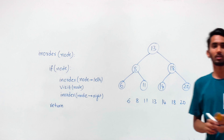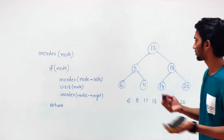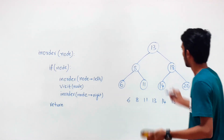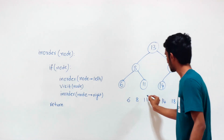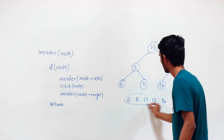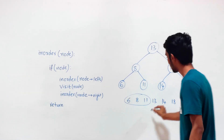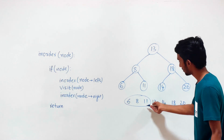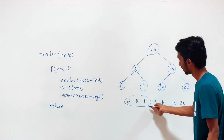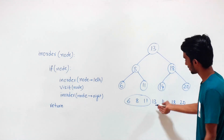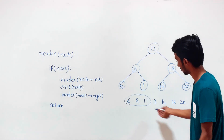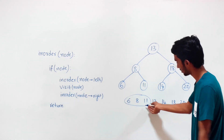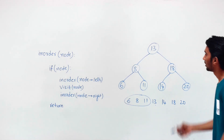Morris in-order traversal has a way of storing addresses. After we are done with the left subtree containing nodes 6, 8, and 11, we need to get back to 13. If you observe, 11 is the predecessor of 13 — the one that precedes 13 in the in-order list is its predecessor.